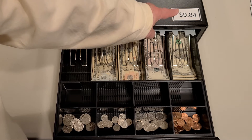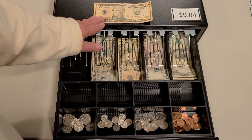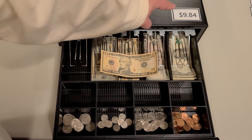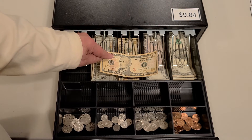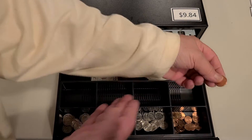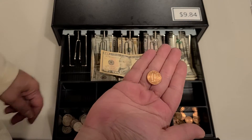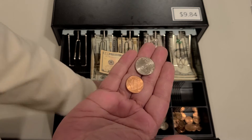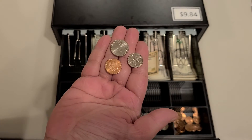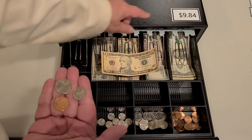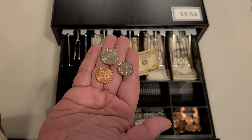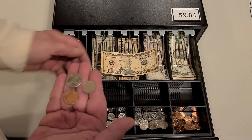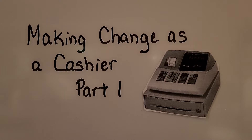Now the total on the register is $9.84. The customer gives us a $10 bill. We start counting at $9.84 up to $10. The change from $10 for a total of $9.84 is $0.16. I hope you found my video helpful — watch part two, where I'll show you how to make change when the customer gives you extra money.